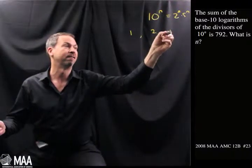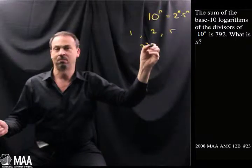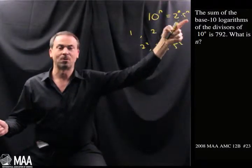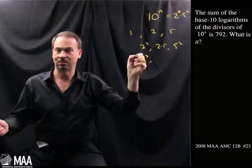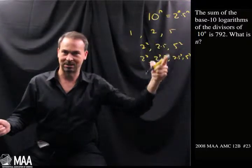And then just 2 itself and 5 itself, like 1 prime. Or it could be a combination of 2 primes. Maybe it's like 2 squared, you know, 2 repeated, or 2 times 5, or 5 squared. Or a combination of 3 primes, like 2 cubed, 2 could get repeated, or 2 squared times 5, 2 times 5 squared, and 5 cubed, and so on.